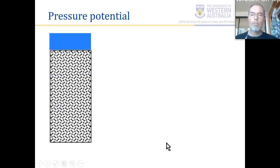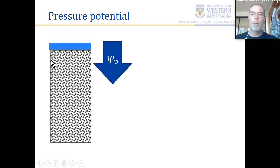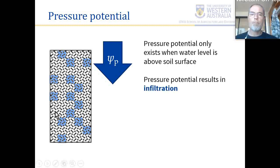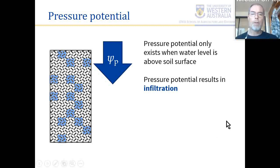Pressure potential only exists where water is standing above the soil surface. The height of that water exerts a pressure related to gravitational potential, and the resulting process is infiltration. Pressure potential exists only on a flooded soil, and the consequence is infiltration from above into the soil. Infiltration is one of the initial parts of water movement in soils — the entry flux of water into the soil system in many cases.